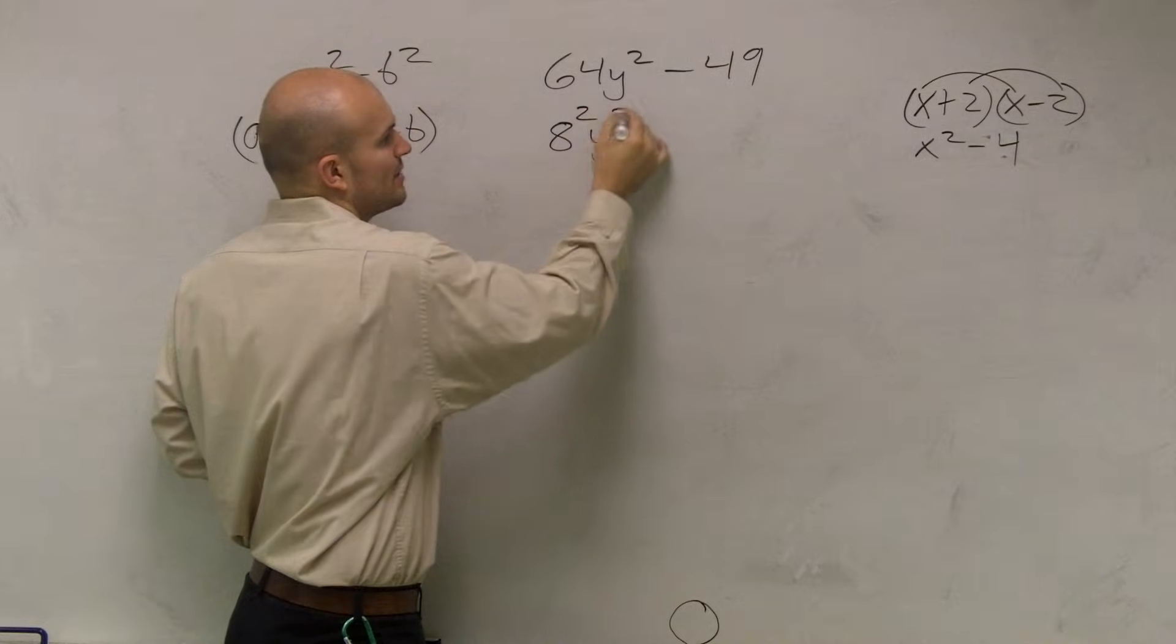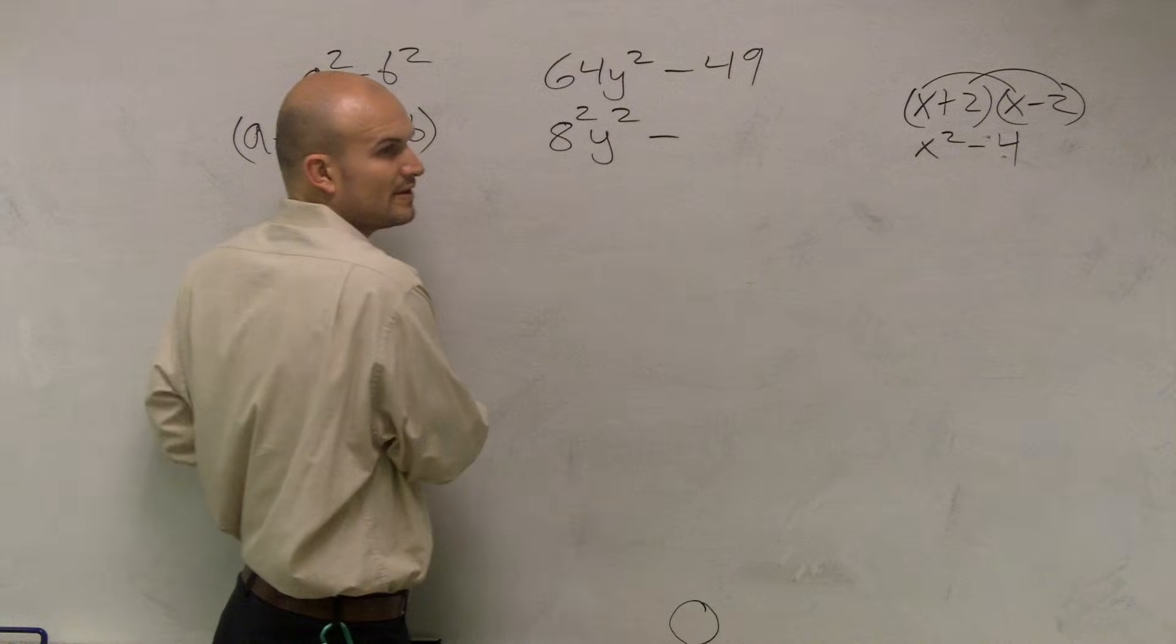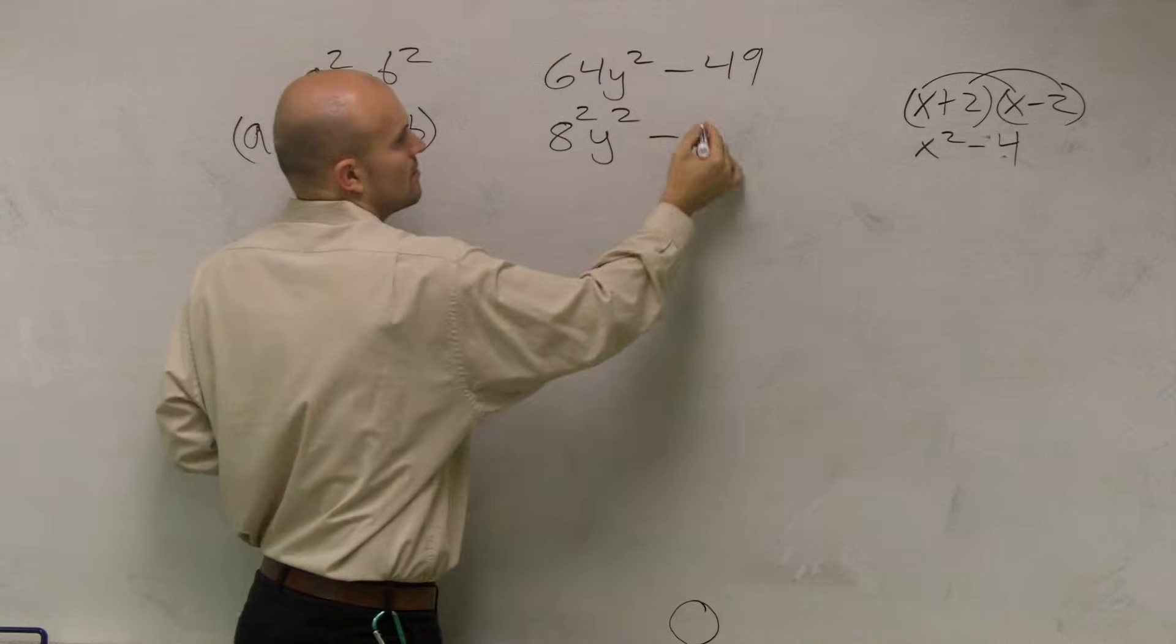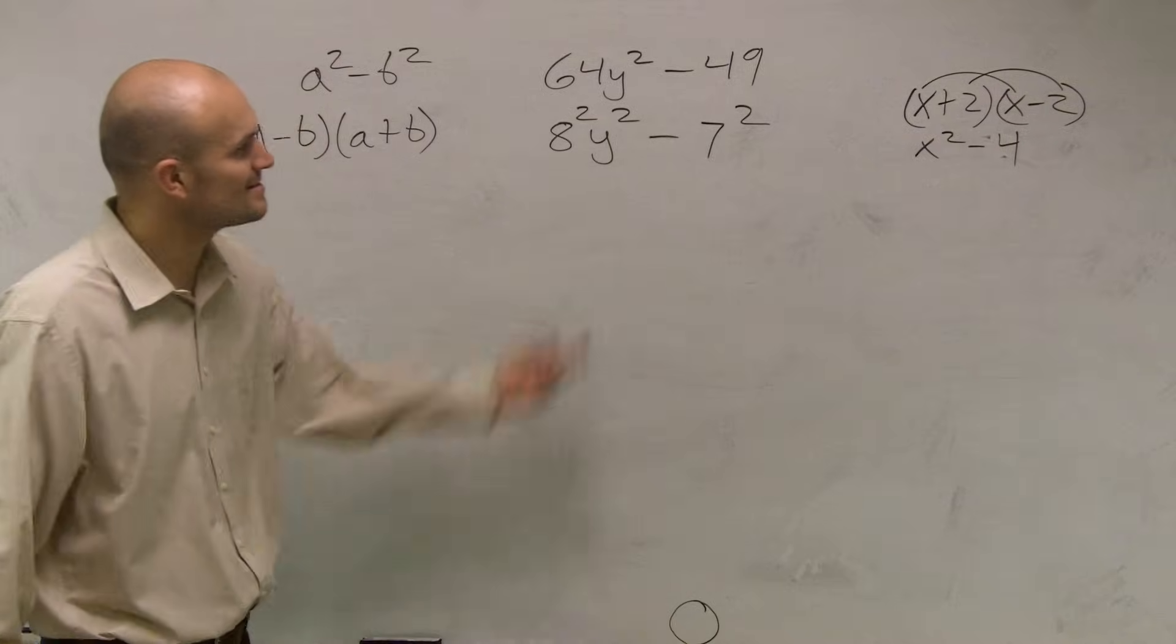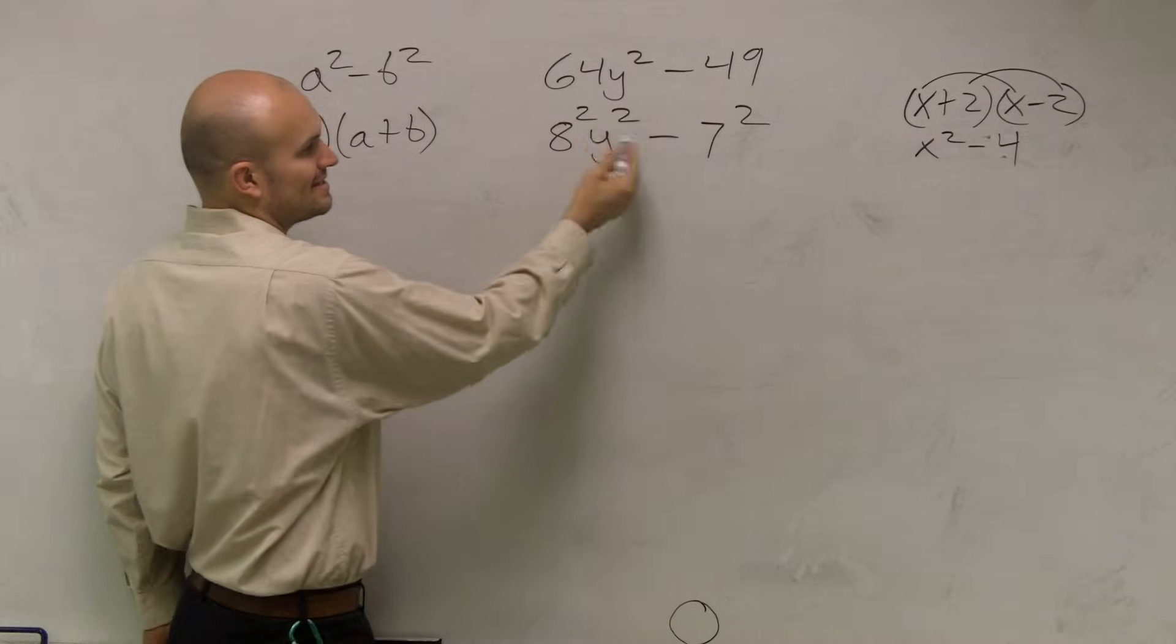And y squared... minus, can 49 be written as a square number? Yes, 49 can be written as 7 squared. So I'm just going to combine these together.